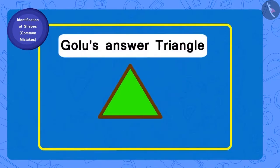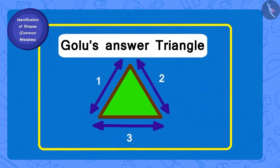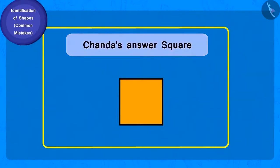Golu has written triangle as the answer. How many sides does a triangle have? Three. And how many corners? Three. Chanda has written square as her answer. How many sides does a square have? Four. And how many corners? Four. Are all the sides of a square equal in length? Yes.